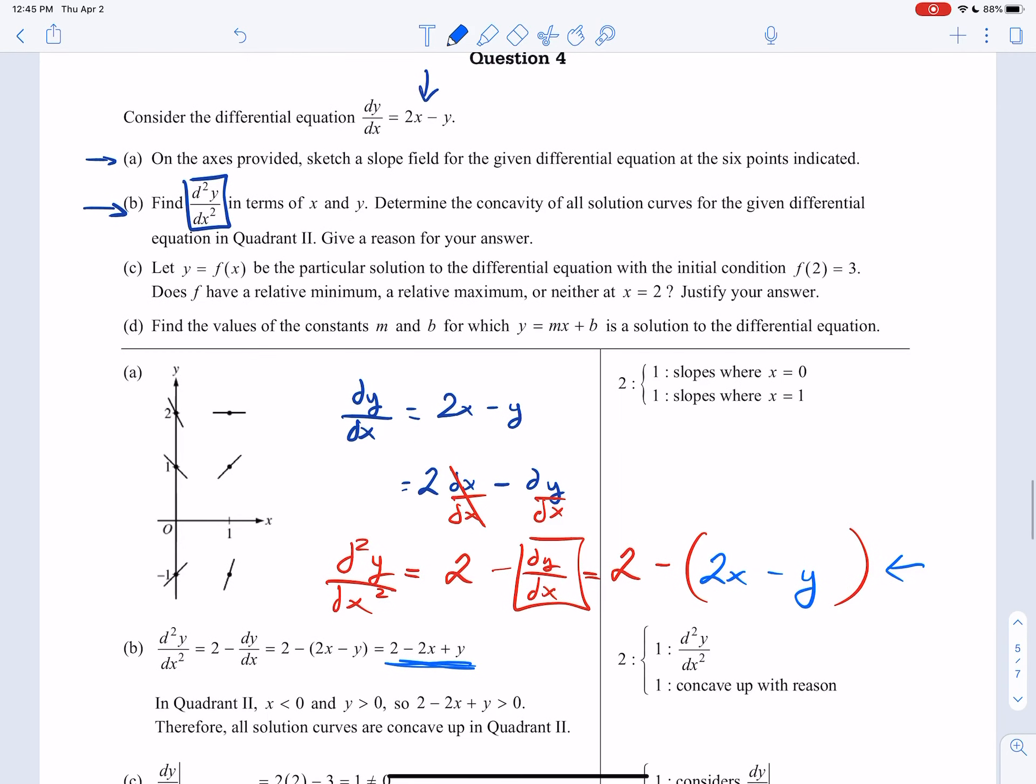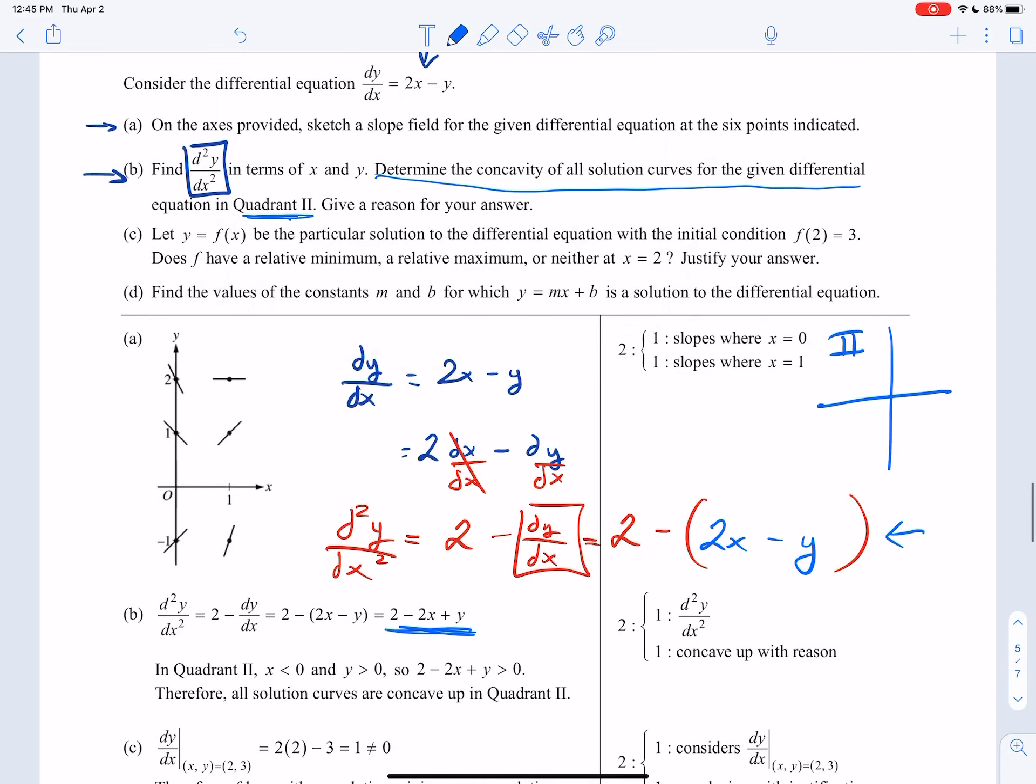Then they ask you, determine the concavity of all solutions if you're in quadrant 2. So some background knowledge, if you're in quadrant 2, you're right over here. So think about every generic point in quadrant 2. What do you know about the x value? What do you know about the y value? You know that you have to have something negative comma positive. So that means x is negative and y is positive.